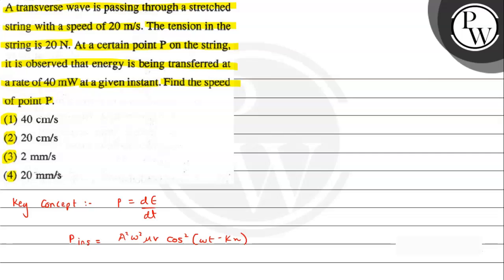We have to be clear with the terms. A is the amplitude. Omega is the angular frequency. Mu is the linear density, mass per unit length. And v is the speed of the wave.